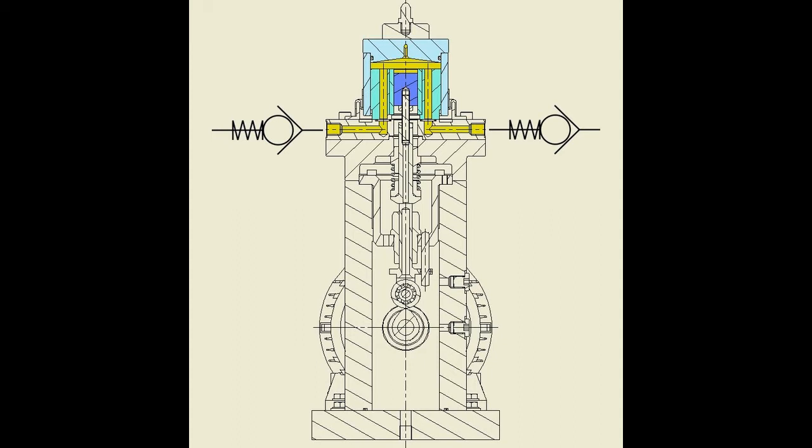A small diameter cam-driven piston reciprocates in a bore in a larger diameter fixed piston. A floating cylinder mounted on the fixed piston generates a pulsating force.